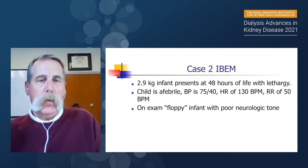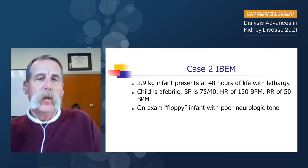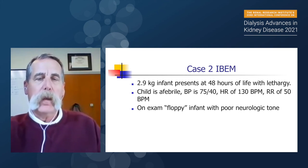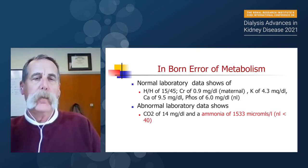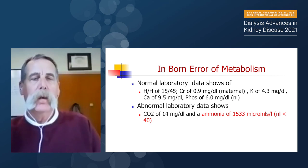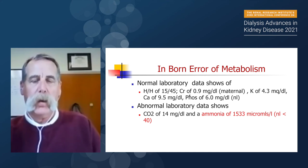Case number two: a real case. A 2.9 kg infant presents at 48 hours of life with lethargy. The child is afebrile, blood pressure normal, heart rate normal, respiratory rate slightly fast, floppy with poor neurologic tone. Labs showed normal H&H, normal creatinine for mom, normal potassium, calcium, and phosphorus. Bicarb was a little low. And the ammonia was 1,533. It was checked three times to confirm — normal in our lab is less than 40. This is the classic presentation of a child with inborn error of metabolism.